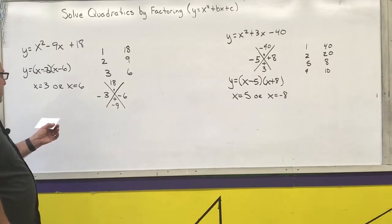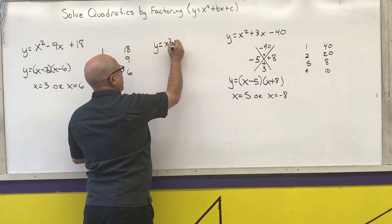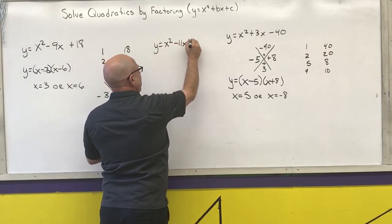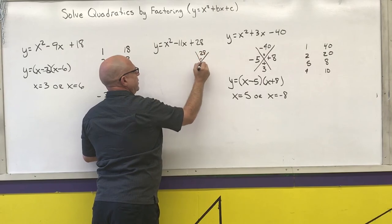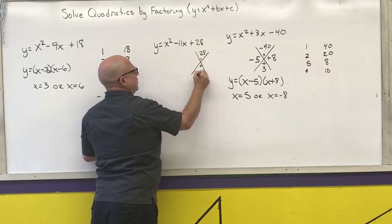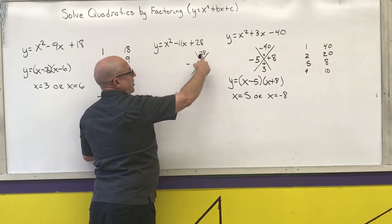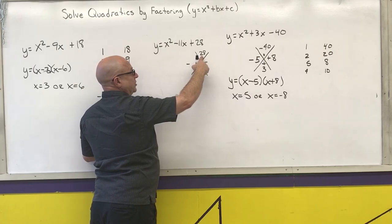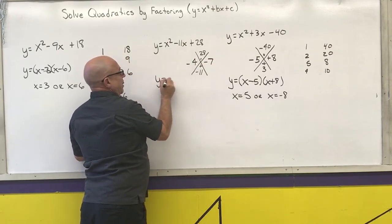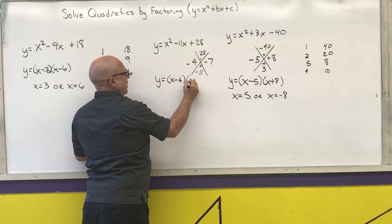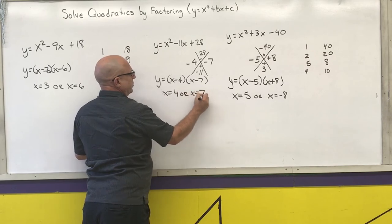Last example: y equals x-squared minus 11x plus 28. I need two numbers that multiply to 28 and add to negative 11. They have the same sign, which is negative. Looking at factor pairs, 4 times 7 equals 28 and 4 plus 7 gives 11. Factored form: (x-4)(x-7), giving solutions x equals 4 or x equals 7.